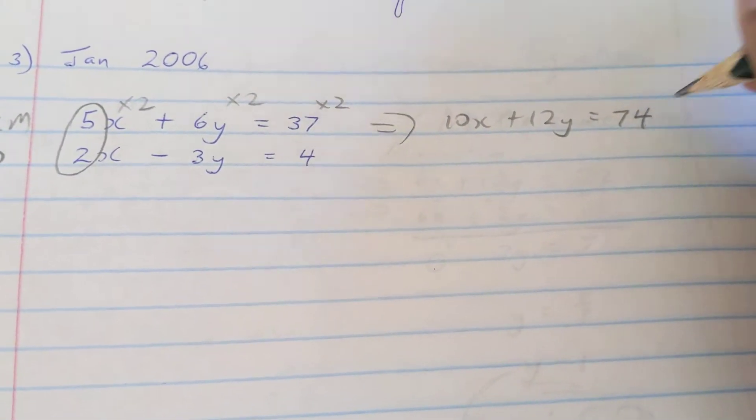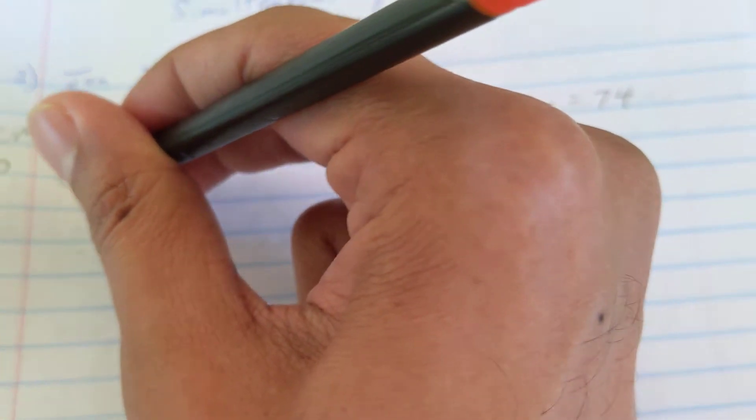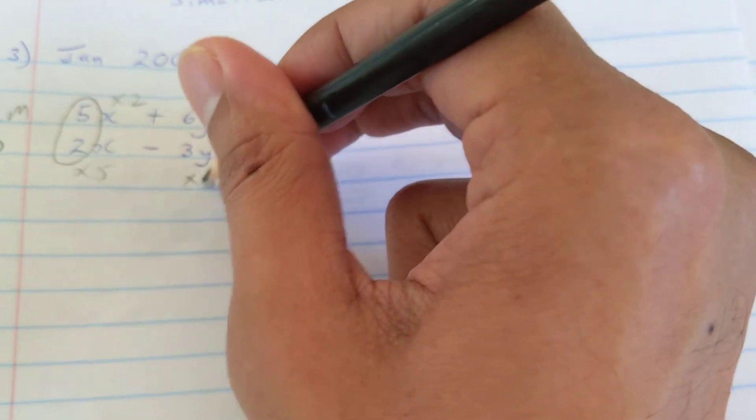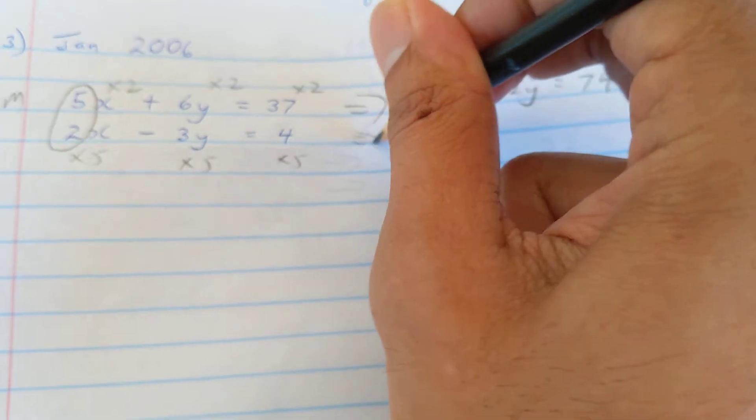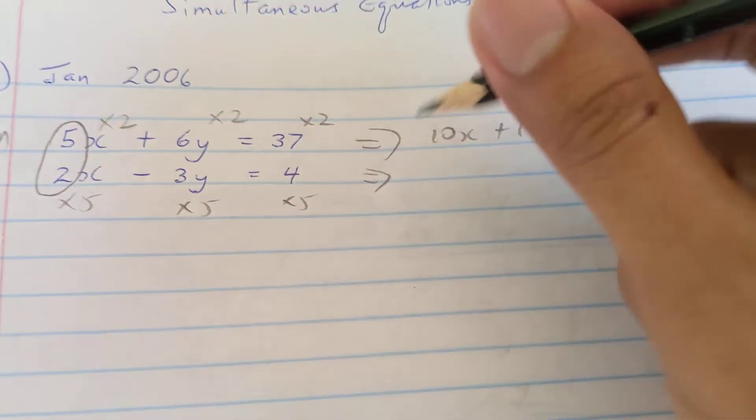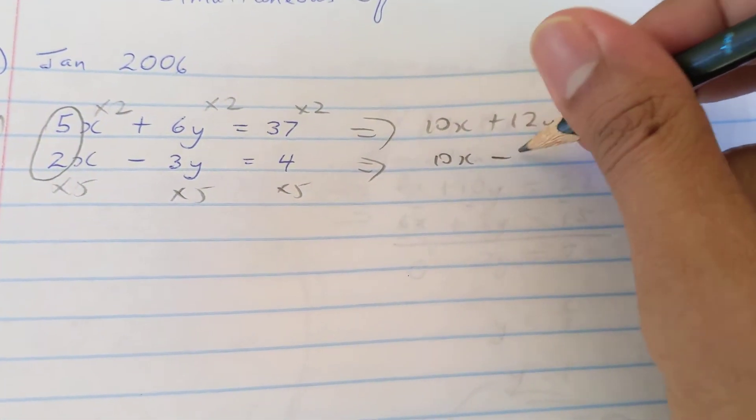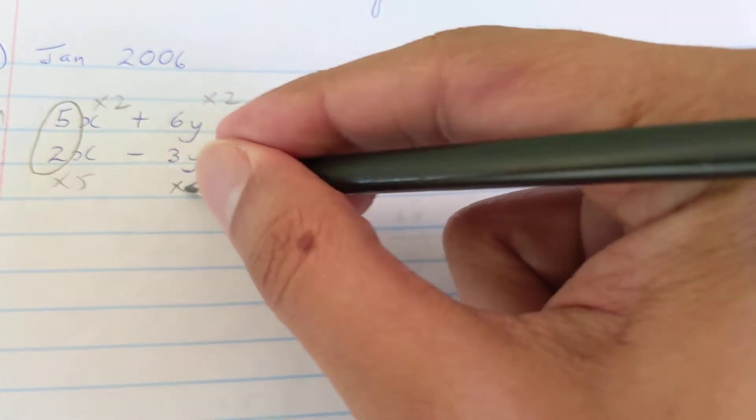Turn this into 10x. 2 by 5 is 10, and everybody in the row has to multiply by 5. 2 by 5 is 10x, minus 3 by 5 is minus 15y. A minus and a plus is going to be a negative value. 5 by 4 is going to give me 20.